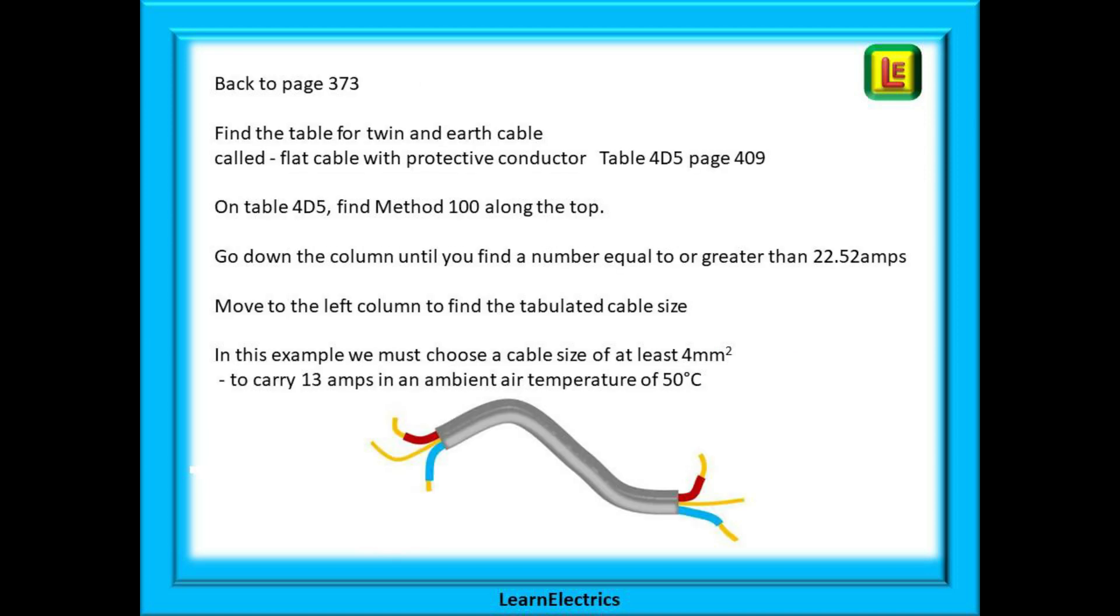We've not finished yet. We know the current. Now we have to choose the cable size. Go back to page 373 and find the table for twin and earth cable. This is called flat cable with protective conductor in the book and is table 4D5 on page 409.